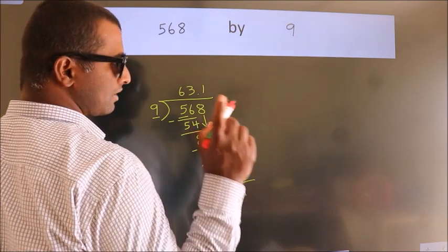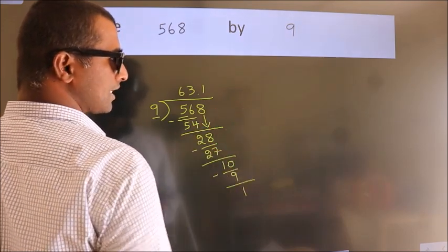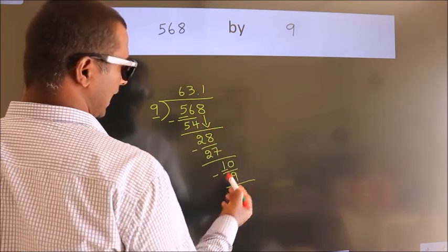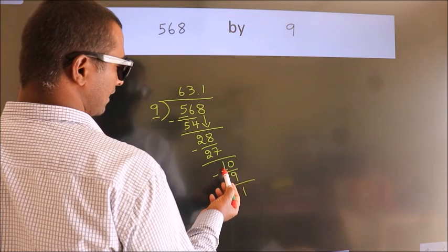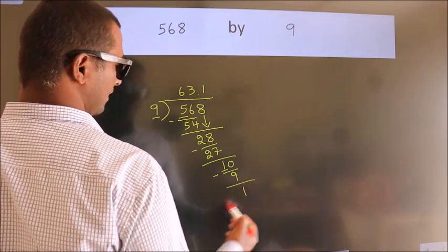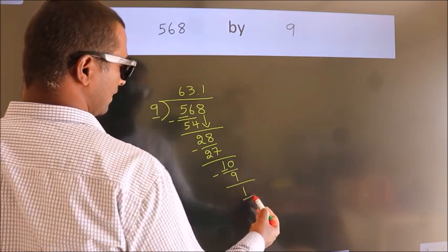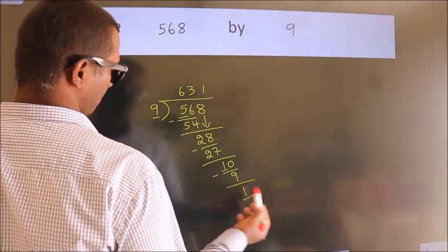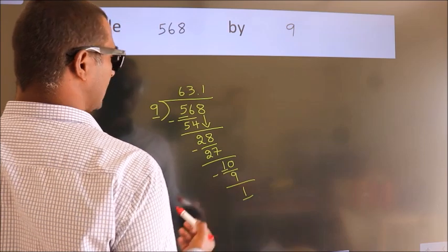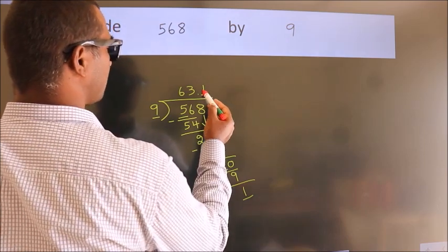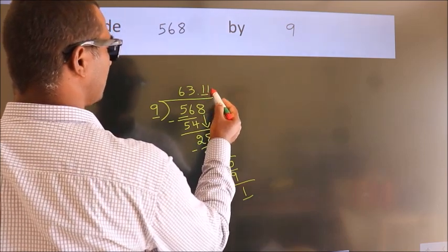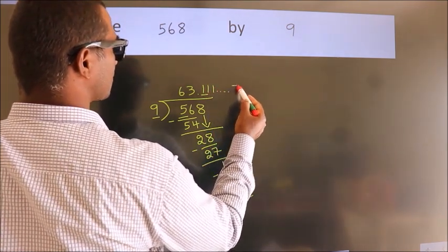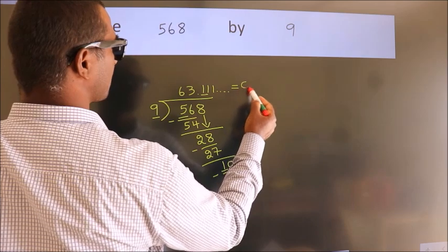Now, observe — here we had 1, and we got 1 again. That means this number keeps on repeating. So this is our quotient.